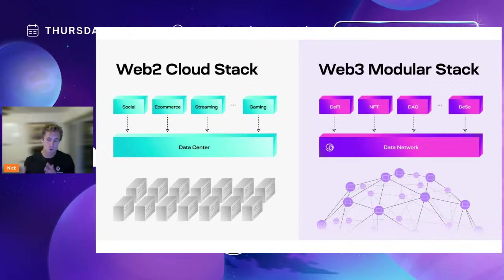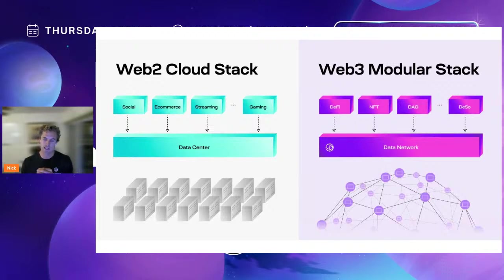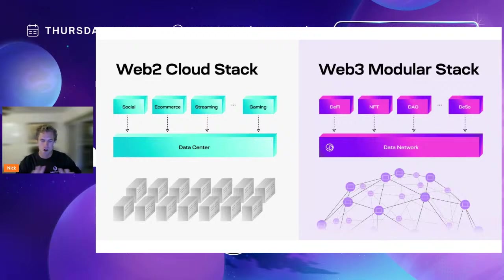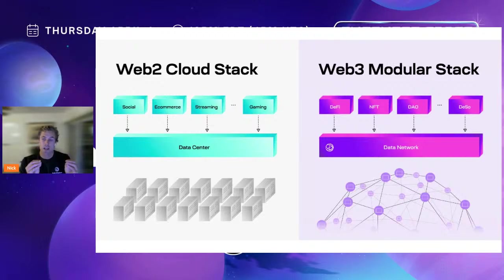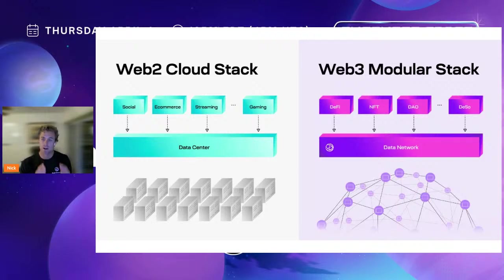If we shift to the web three modular stack, it's a very similar paradigm. Instead of a data center, you have a data network like Celestia. What it does is provide you with the raw resource of block space — pure raw block space that you as a blockchain developer can come to and say, I want this much block space, and I want to run a virtual blockchain, also known as a rollup or an L2, customized for the application I want to run. You don't have to worry about infrastructure, and you have the flexibility to define the other layers of the stack.